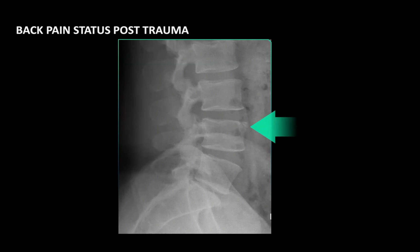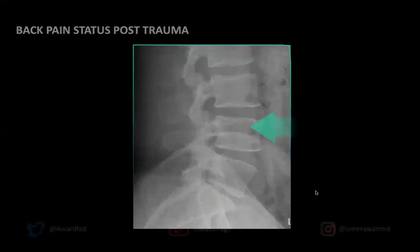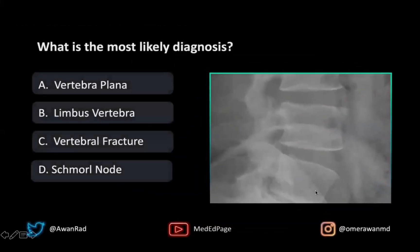This is a patient that's had back pain, status post-trauma. We have a cone-down view of the lateral lumbar spine with an arrow pointing at the L4 vertebral body. The question here is: what's the most likely diagnosis? Is this a case of a vertebra plana, limbus vertebrae, a vertebral fracture, or a Schmorl's node?